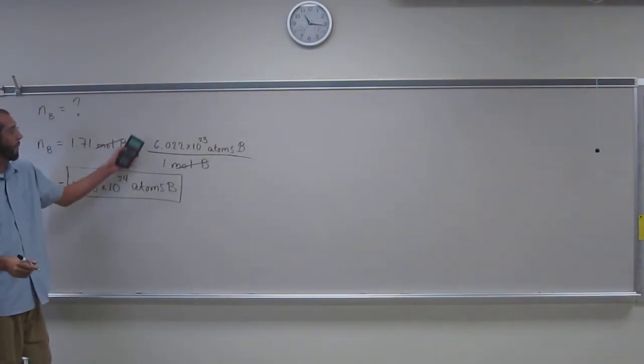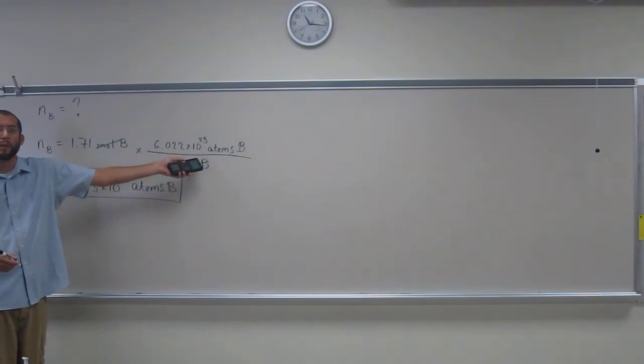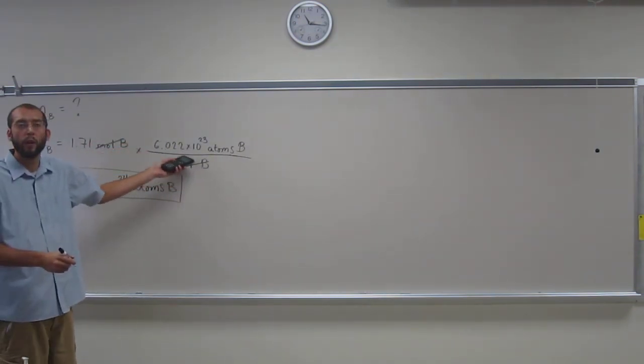Okay, so remember this isn't something that's specific to boron. It's anything that you have a mole of is 6.022 times 10 to the 23rd.